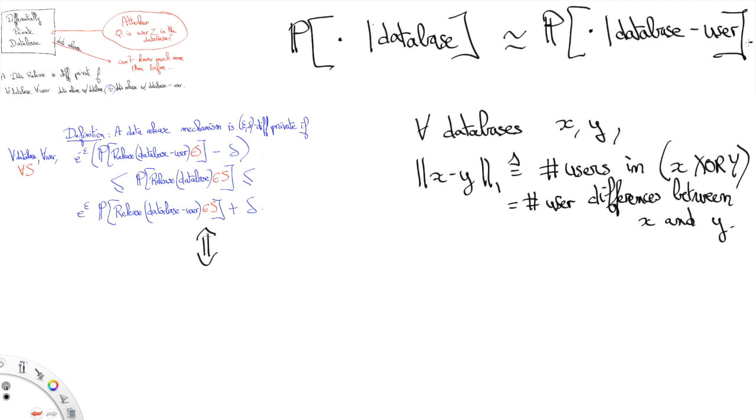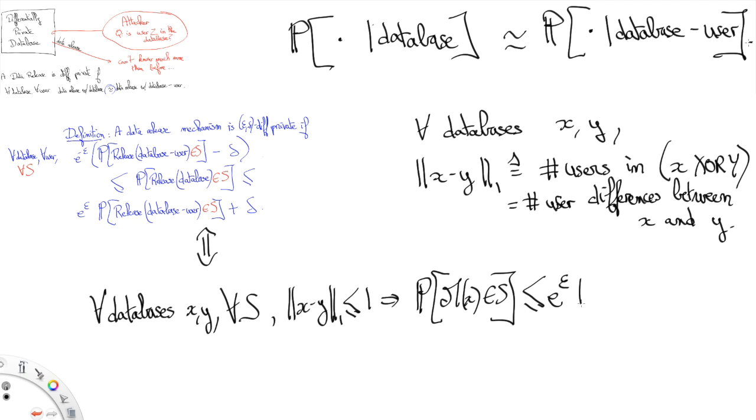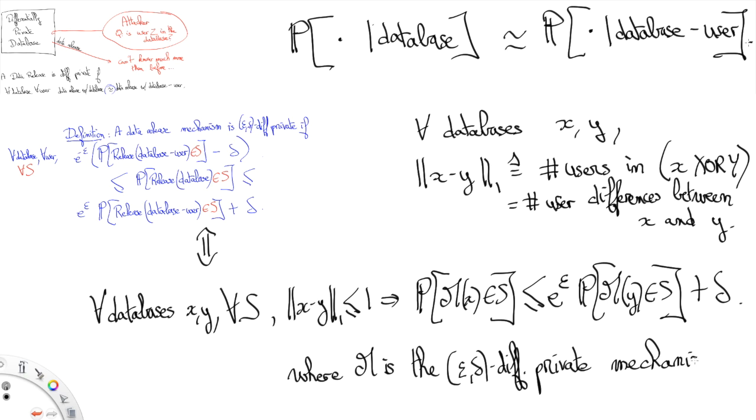Anyways, differential privacy boils down to writing x minus y being of norm 1 smaller than 1 implies the fact that the probability that m of x is in S has to be smaller than e to the epsilon times the probability that m of y in S plus delta, where m is the data release mechanism, and this equation for differential privacy to hold must hold for all values of x, y, and S.